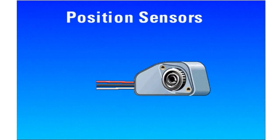The third type of sensor is a position sensor. An example of a position sensor is the accelerator pedal position sensor. This sensor monitors the position of the accelerator pedal and converts that position into a pulse width modulated signal that is sent back to the ECM.